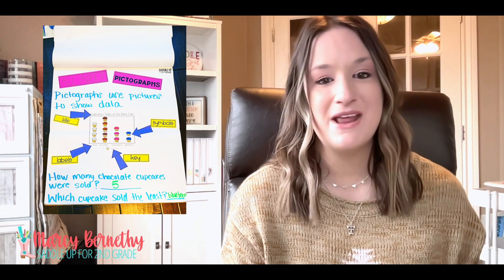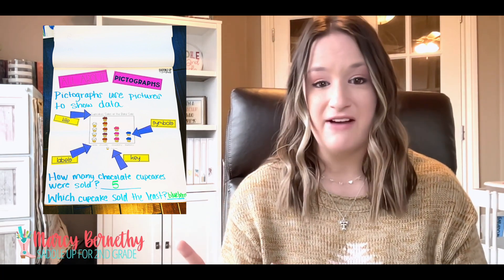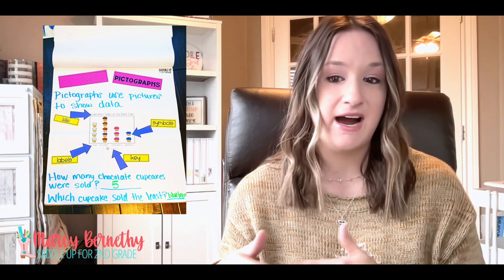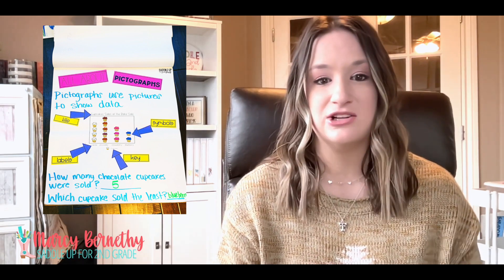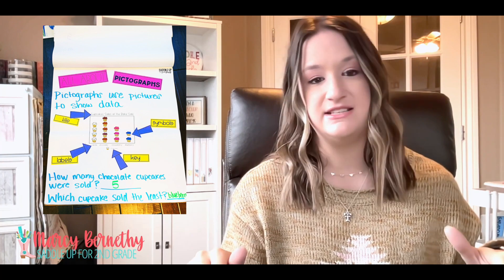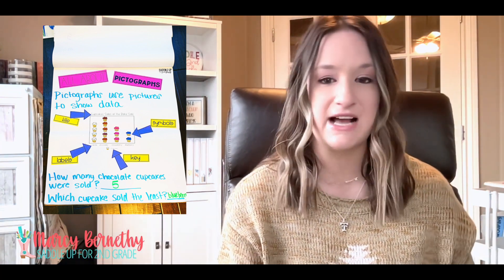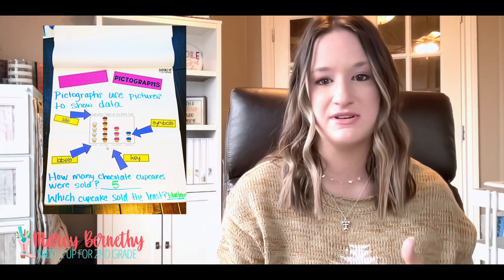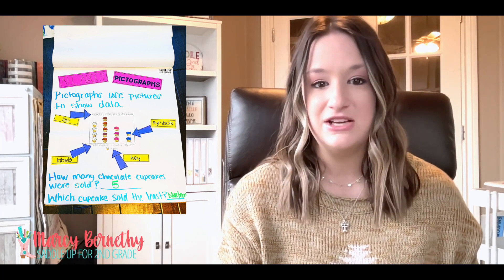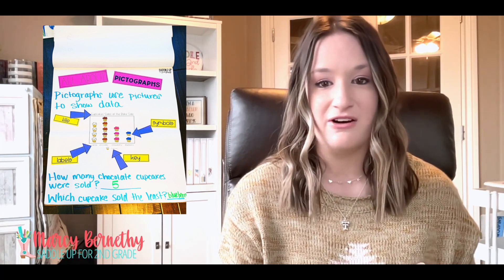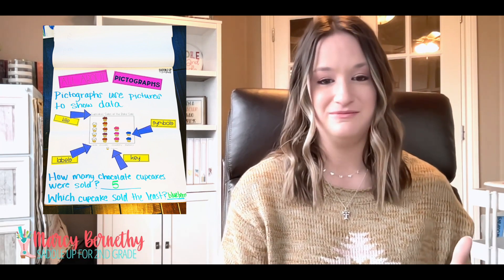Then up next we have the labels. The labels are placed along the axis of the graph — typically on the bottom or on the side — and this shows exactly what is being represented. The pictures are placed above each label to represent the value of that category on the graph.